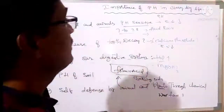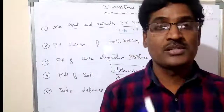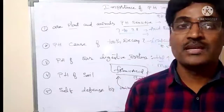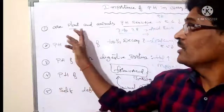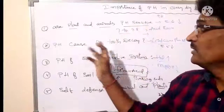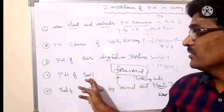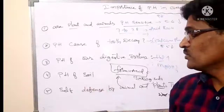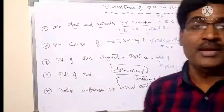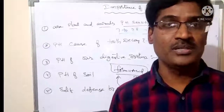This is overall about pH. pH means negative logarithm of H plus ions concentration. We use pH in daily life — for aquatic life, teeth decay, our digestive system, pH of the soil, and self-defense by animals and plants. These are the topics covered in the pH concept.